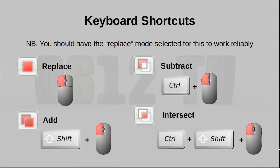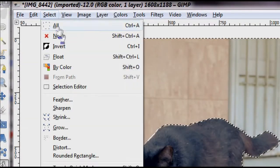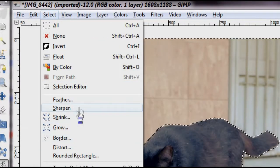When you get more used to GIMP and want to do things faster, you can use several keyboard shortcuts. Shift selects Add mode, Control means Subtract, and pressing both Shift and Control means Intersect. There are also more things you can do to manipulate your selection by going to the Selection menu in the menu bar.